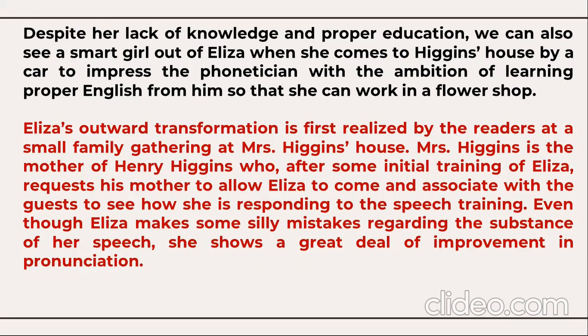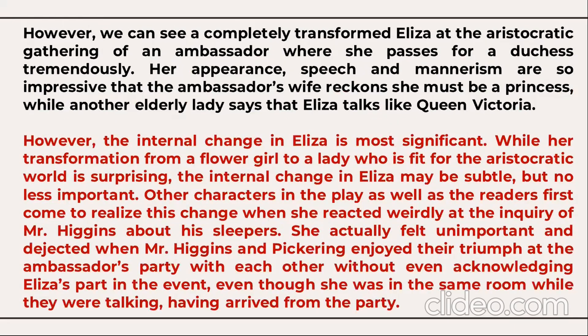Eliza's outward transformation is first realized by the readers at a small family gathering at Mrs. Higgins' house — Mrs. Higgins being the mother of Henry Higgins — who, after some initial training of Eliza, requests his mother to allow Eliza to associate with guests to see how she is responding to the speech training. Even though Eliza makes some silly mistakes regarding the substance of her speech, she shows a great deal of improvement in pronunciation. We can then see a completely transformed Eliza at the aristocratic gathering of an ambassador, where she passes for a duchess tremendously.